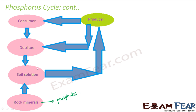Now this soil solution will then be absorbed by the producers, that is the plants, because plants are on the soil. They tend to absorb the dissolved phosphates from the soil. That is how the phosphates dissolved in soil solution can be utilized by the producers of the ecosystem.